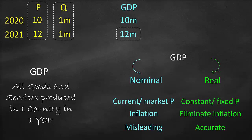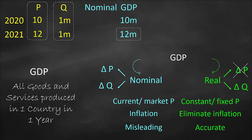To sum up: nominal GDP measures a change in price as well as a change in quantity. With real GDP, prices are constant. So if prices are constant, the change in price is zero — meaning real GDP measures only a change in quantity. Therefore, in our example, the GDP we calculated is considered nominal GDP, and we need to calculate real GDP.